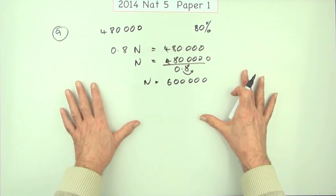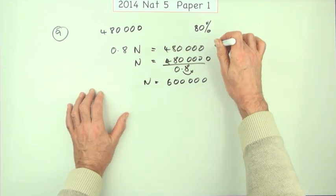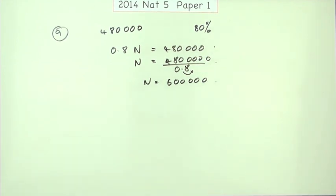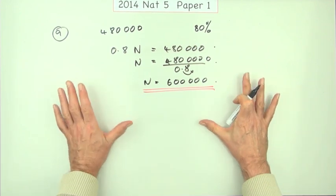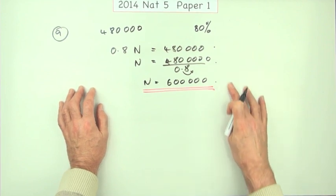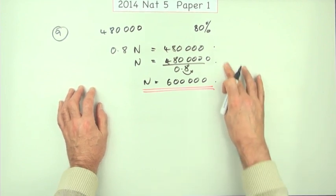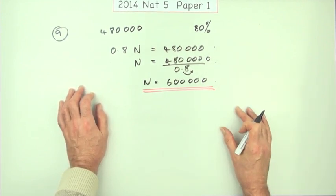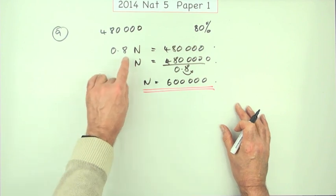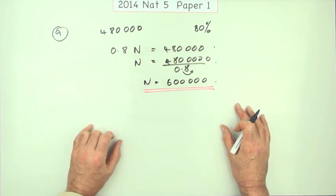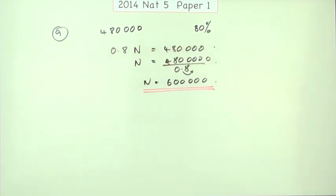Even though that method isn't explicitly stated in the marking scheme, it would still earn the full three marks. It's surprising it wasn't stated first, because that's normally what you'd do in more complicated percentage calculations — use the decimal factor so it just becomes an ordinary equation.